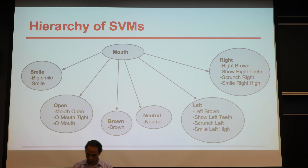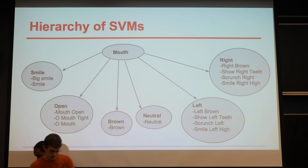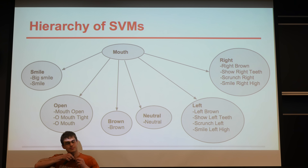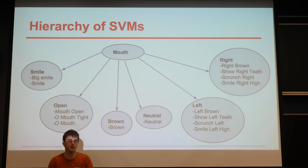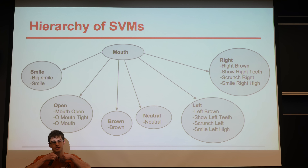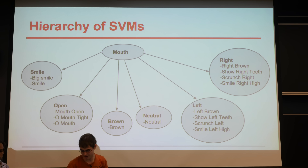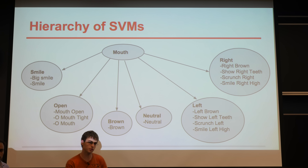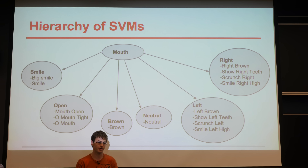Chris is going to talk about the hierarchy of SVMs we tried, which is giving us some good results. The idea behind this model is that you don't have to do exact action unit recognition, only approximate. For example, the smile action unit is very similar to the big smile action unit. So we first group action units into clusters, then classify which cluster the input belongs to, and then run a separate classifier to determine which specific action unit it is.